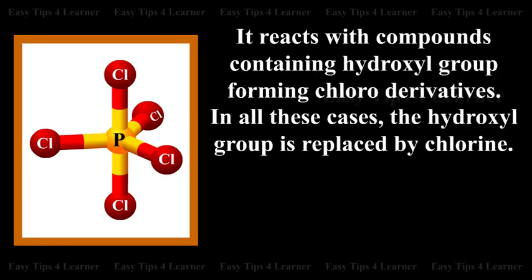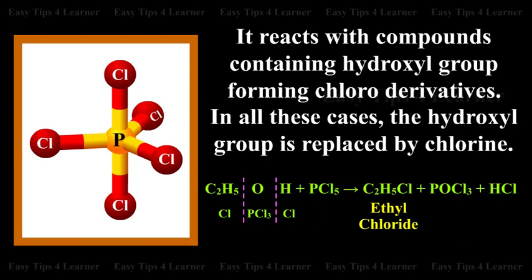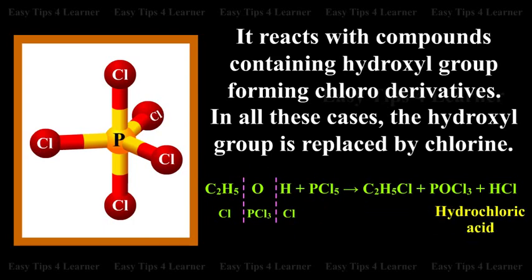It reacts with compounds containing hydroxyl groups forming chloro-derivatives. In all these cases, the hydroxyl group is replaced by chlorine. Ethyl alcohol plus phosphorus pentachloride gives ethyl chloride plus phosphorus oxychloride plus hydrochloric acid.